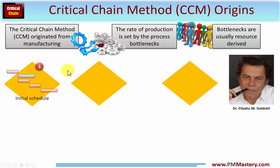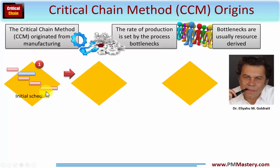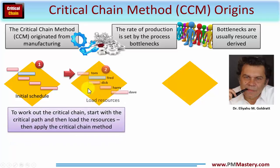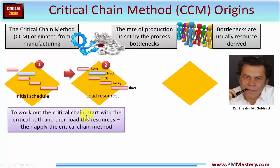Starting off at a fairly high level, step one would be to form your initial schedule within a Gantt chart, as shown here, which leads to step two: deriving what the critical path and critical chain actually are. To work out the critical chain, you start with the critical path, then load the resources, then apply the critical chain method. At this juncture the project is loaded with resources and you have a schedule in place.